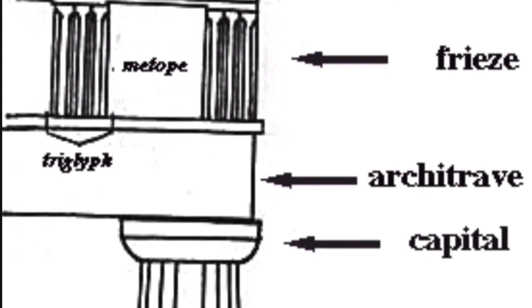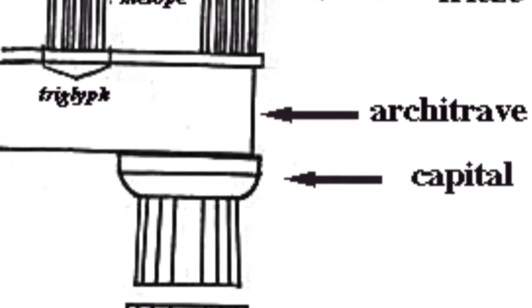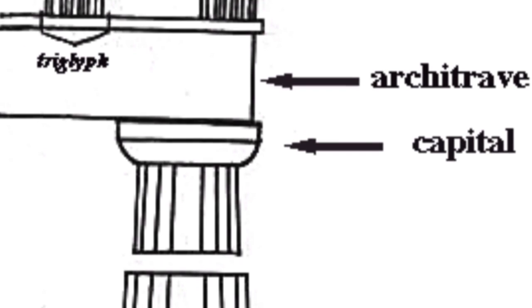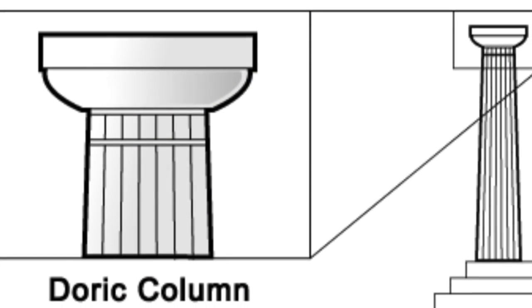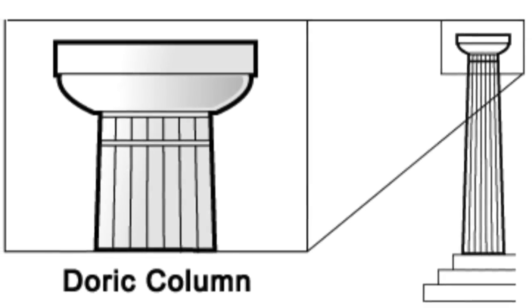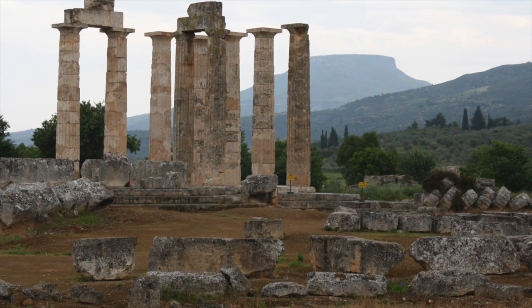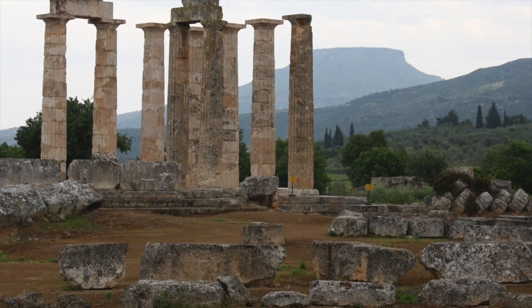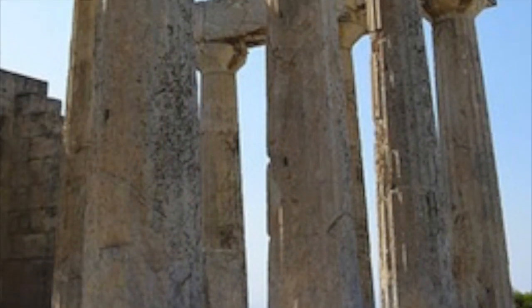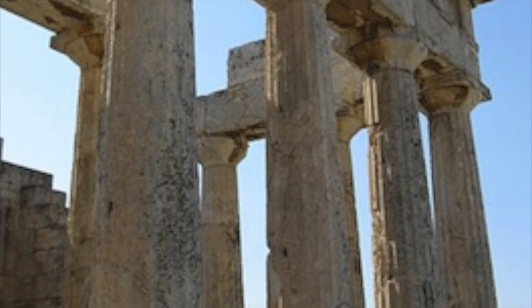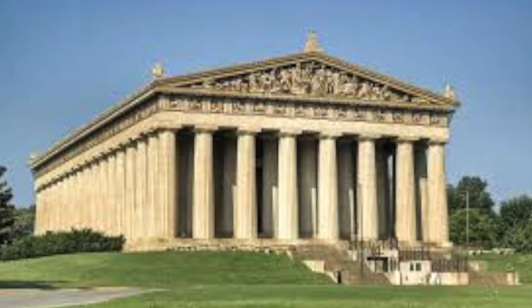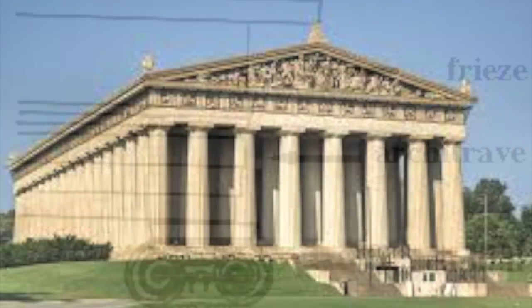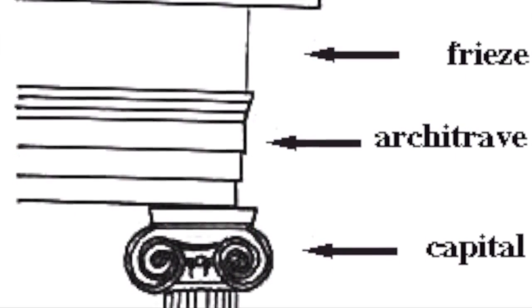The Doric was the first order, mostly used in the mainland of Greece and colonies in southern Italy and Sicily. This order started with wooden pillars, which eventually evolved into column stones. The components included a shaft, a capital, an architrave, a frieze, and its cornice at the top. A very good example of this is the Parthenon structure.